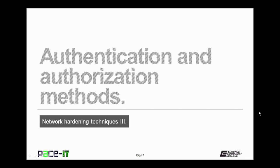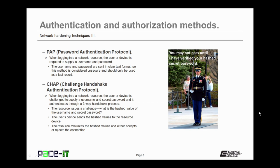Let's talk about authentication and authorization methods. The first method is PAP, Password Authentication Protocol. When logging into a network resource, the user or device is required to supply a username and password. The username and password are sent in clear text format, so this method is considered unsecure and should only be used as a last resort. More secure than PAP is CHAP, Challenge Handshake Authentication Protocol. It is similar to PAP in that the user or device is challenged to supply a username and secret password, and it authenticates through a three-way handshake process.